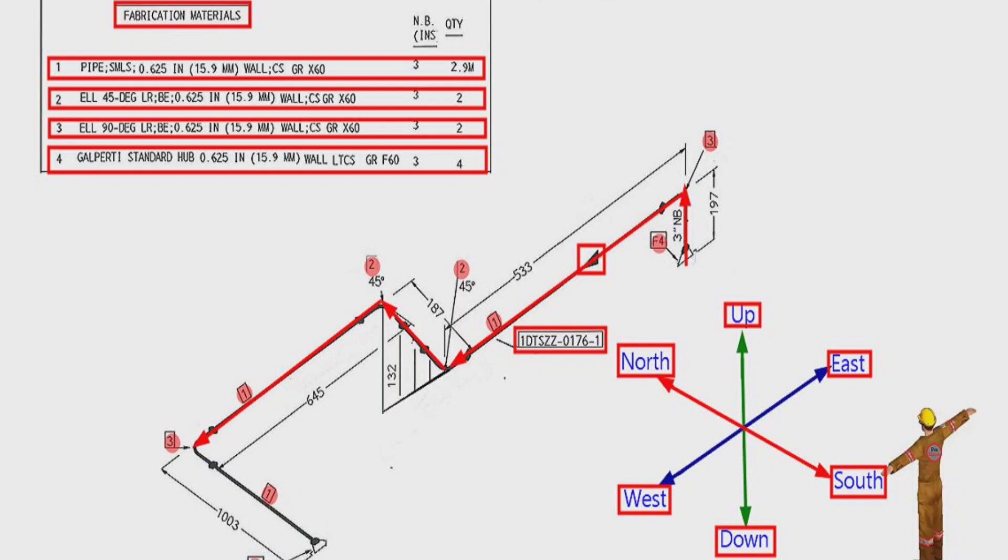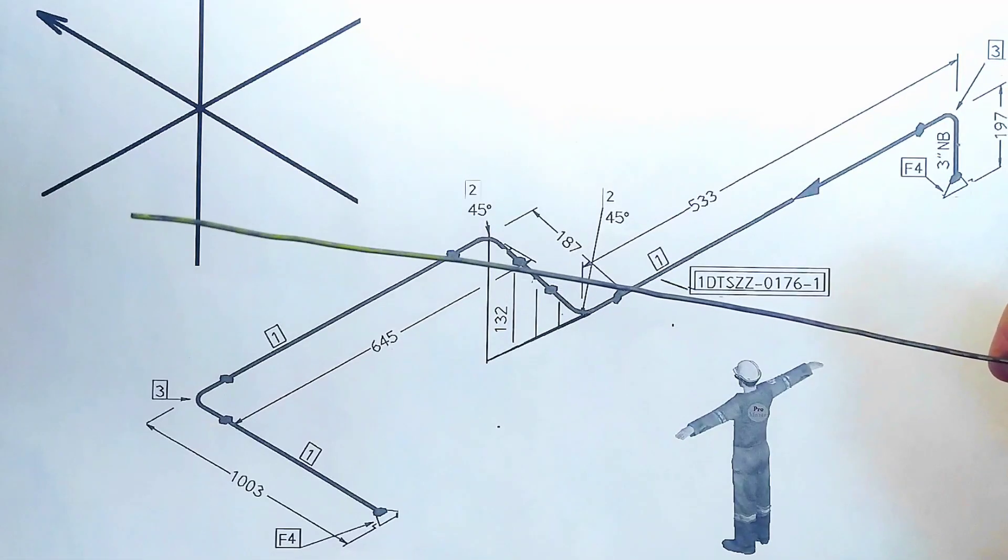In this point, pipeline turns to the south direction. So, the correct reading of the pipe drawing is completed. Now let's bend the wire of this pipe drawing using these directions we learned.